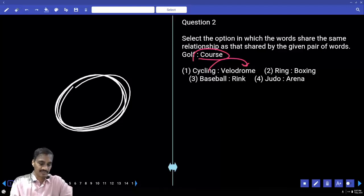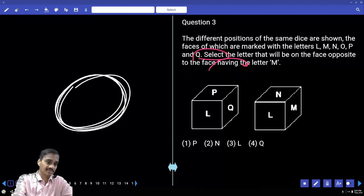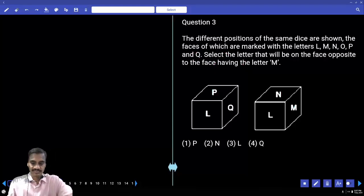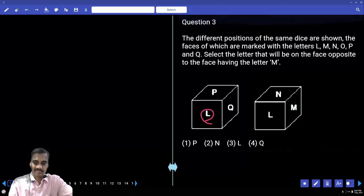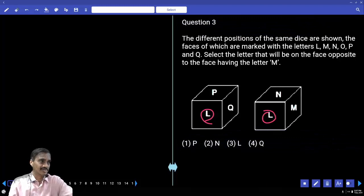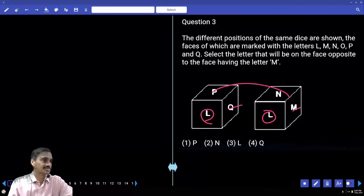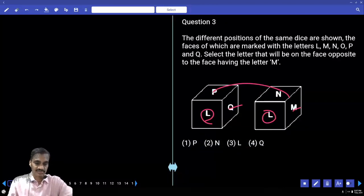Question number three: which is opposite to M? The different positions of the same dice show faces marked with letters L, M, N, O, P, and Q. It is on the same side. P and N are opposite, Q and M are opposite. Hence, Q is opposite to M, choice four.